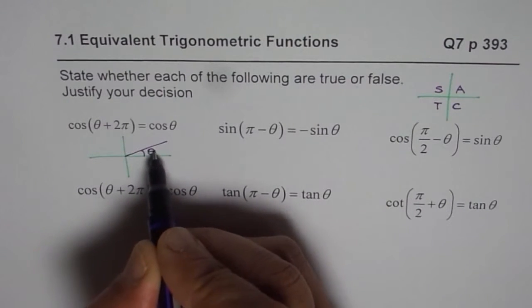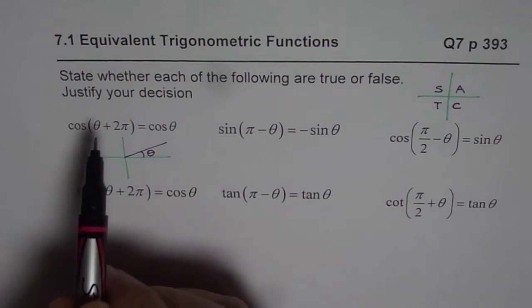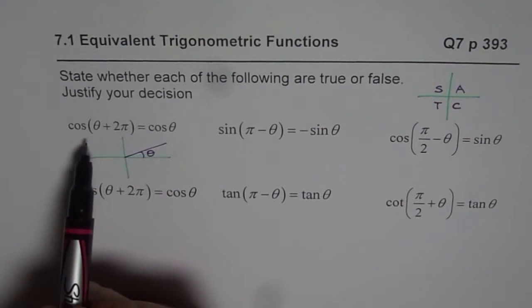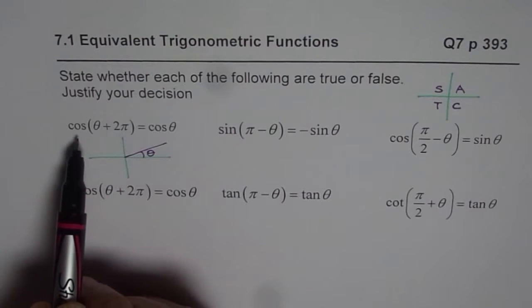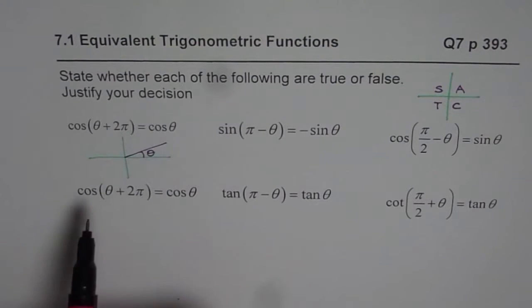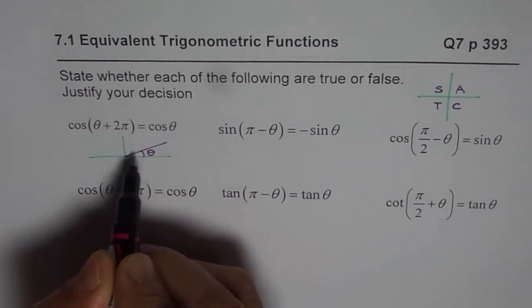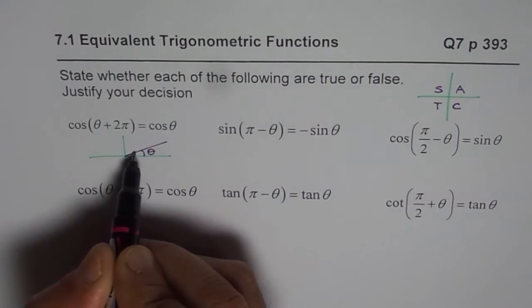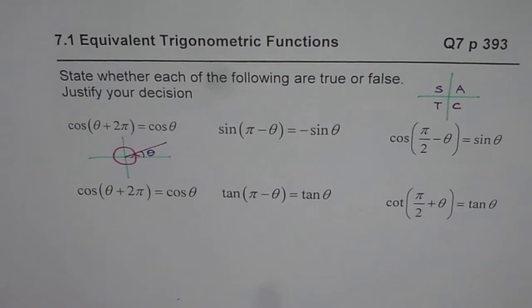Let me just draw this theta first for you and then we will consider the equivalent ratio. In this question we are given cos theta plus 2π. So we are given cos(θ + 2π) = cos θ. Is it true or false? Now what does it mean? Theta is this, plus 2π means from here go one full circle. If you go one full circle you come to the same point.